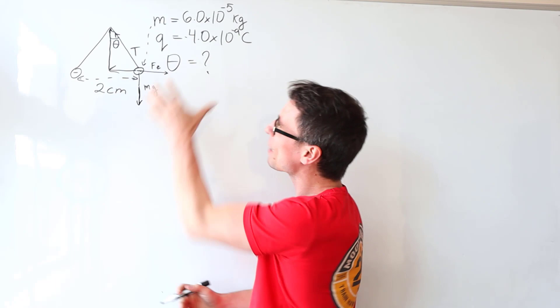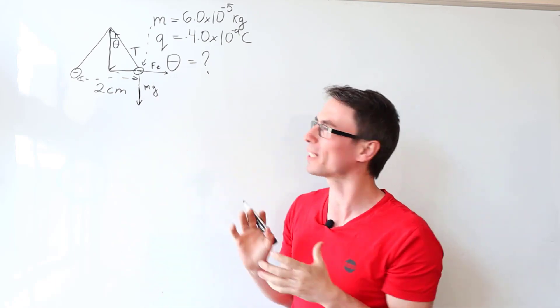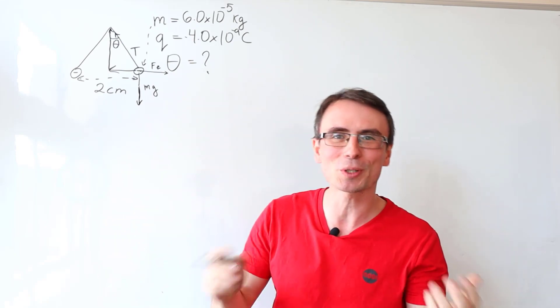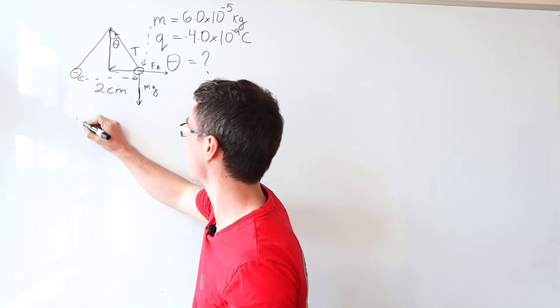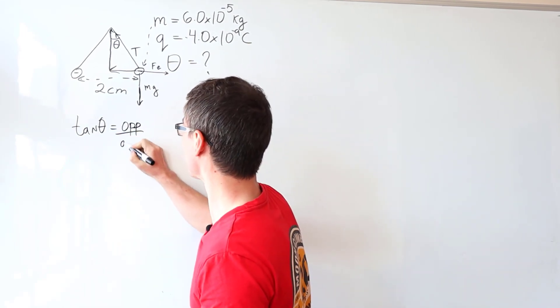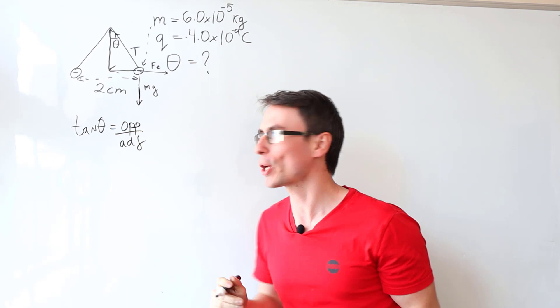A good tip for these types of problems is that whenever you see a similar diagram, you're going to have to use some trigonometry most likely. So I'm going to use one of my favorite trig functions and this is tan. Tan of theta is equal to the opposite divided by the adjacent.